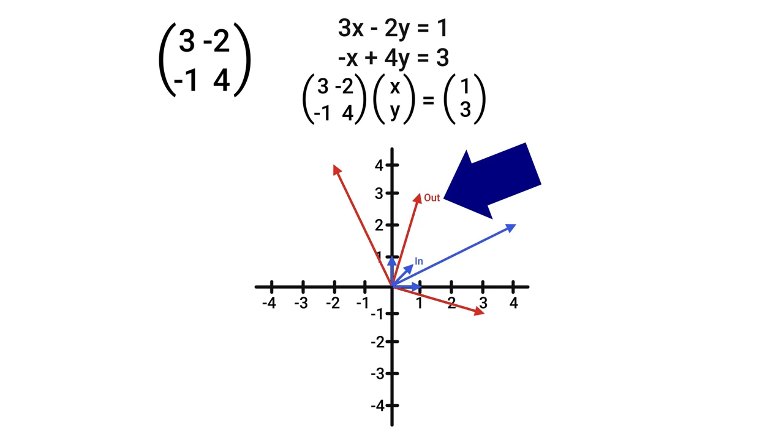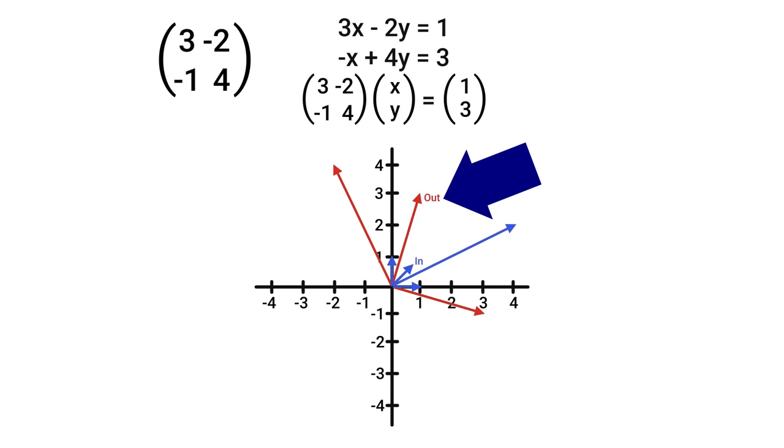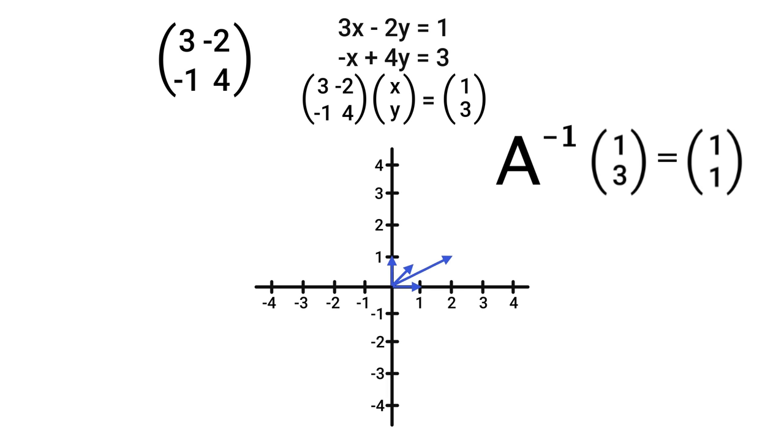Well we already saw the answer to this. (1,3) is this output. And the question of which vector will the matrix map to this involves us just doing the same transformations as before, but backwards to find the answer is (1,1). That will be our solution. Going backwards is like applying an inverse matrix, and when the desired output is the one being multiplied, then the vector it came from comes out. So x equals 1 and y equals 1 are the solutions. If we plug those into the original equations, then both are satisfied, which is exactly what we were looking for.